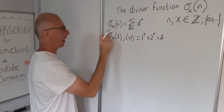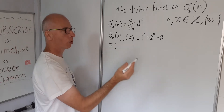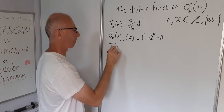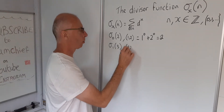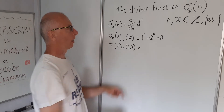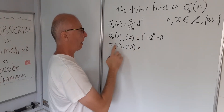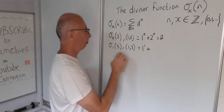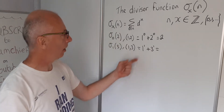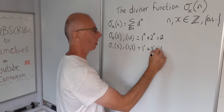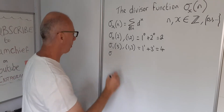Now let's try X=1 with n=3. The divisors of 3 are just 1 and 3, so using the sum we get 1 to the power of 1 plus 3 to the power of 1. Since anything to the power of 1 is itself, this gives us 4.